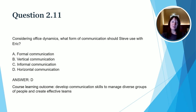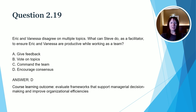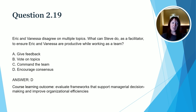This question asks about Eric and Vanessa's disagreements, specifically what Steve can do as a facilitator and leader to ensure they are productive while working as a team. The correct answer is D, encourage consensus. Giving feedback, voting on topics, or commanding the team are usually not the right ways to address these types of conflicts. Encouraging consensus — meeting with them as Steve has already done — is the best way to motivate the team, help them get along, and improve productivity. The course learning outcome is: evaluate frameworks that support managerial decision making and improve organizational efficiencies.